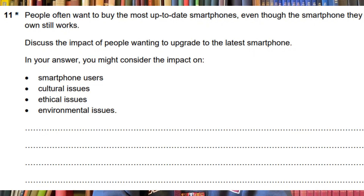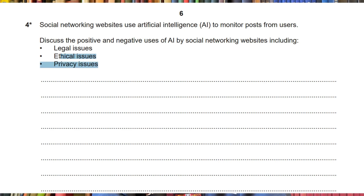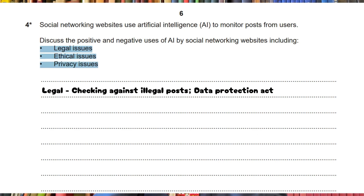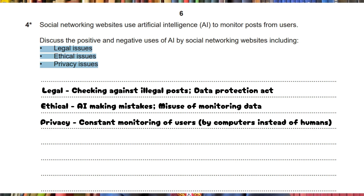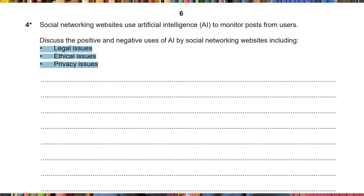So how about tackling the tricky long answer essay question? There'll always be bullet points telling you what you should cover, so it's a good idea to spend two to three minutes planning. Split each bullet point into a few subtopics, each of which will form a few sentences in your mini essay. Remember that it's an eight or nine mark question, meaning you should spend 10 to 15 minutes overall, so a paragraph per bullet point will be enough.